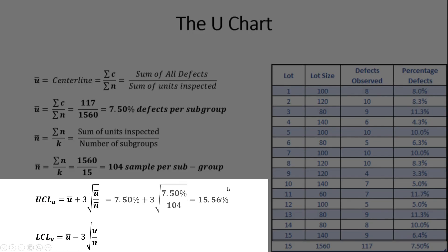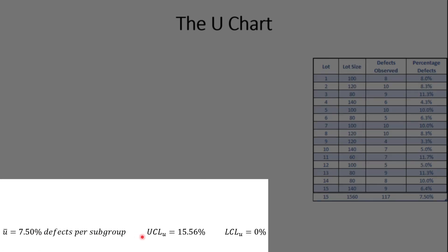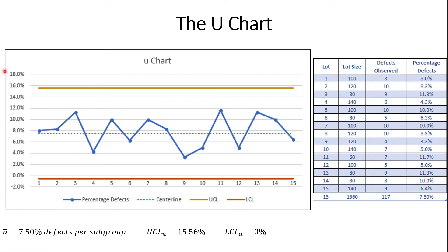We plug U bar at 7.5% and N bar at 104 into our control limit formulas. The upper control limit comes out to 15.56%. The lower control limit comes out to a negative number, which we round up to zero. Here's what the control chart looks like: the y-axis is in percent defects, the center of our process is at 7.5% defects. Note: the lower control limit should actually be at 0% — showing a negative percent doesn't make sense. We're plotting percent defects per subgroup in blue: 8%, 8.3%, 11.3%, 4.3%, 10.0%, 6.3%, 10%, 8.3%. In general, the process appears stable and in control.